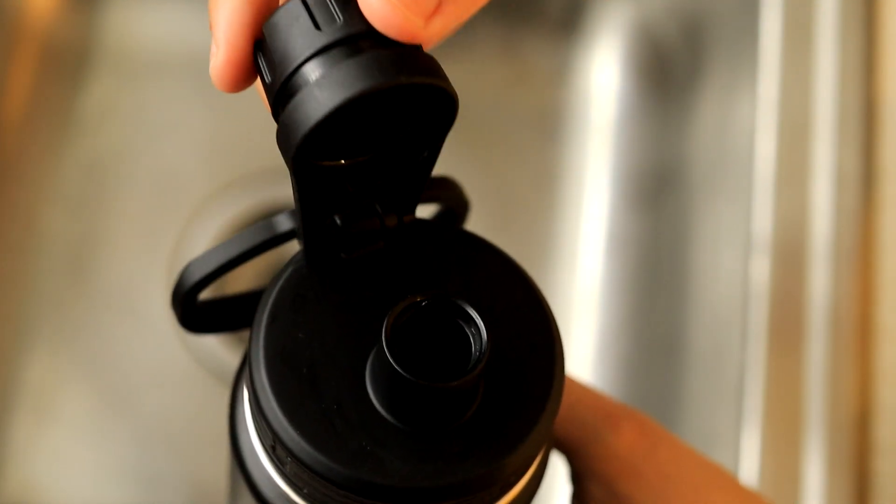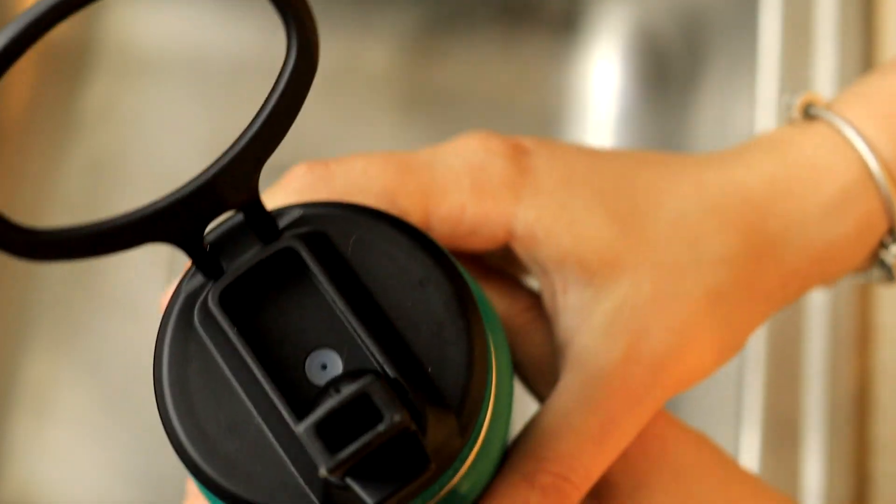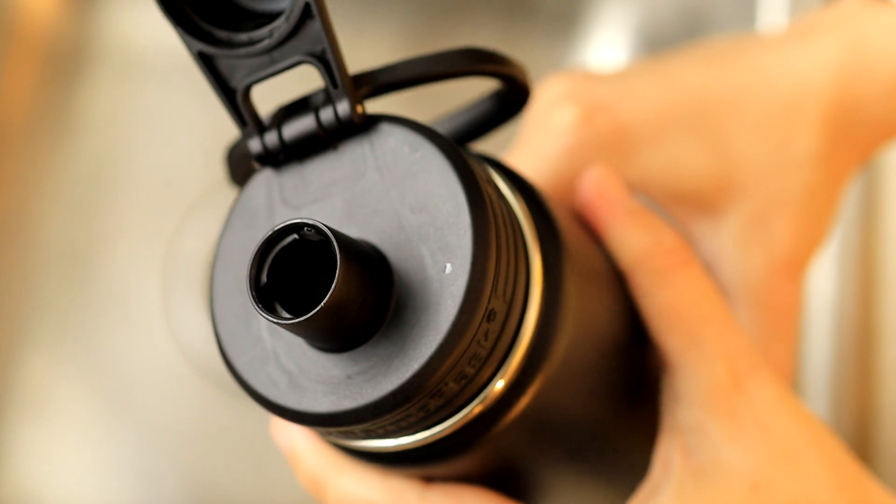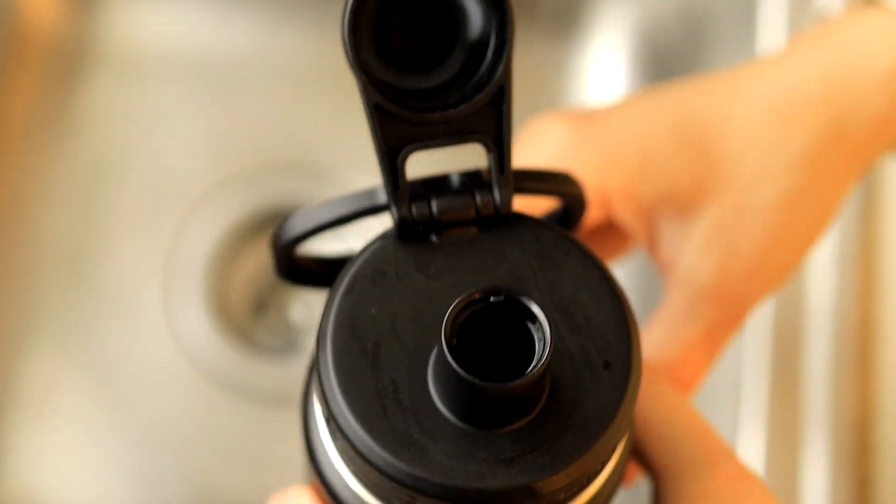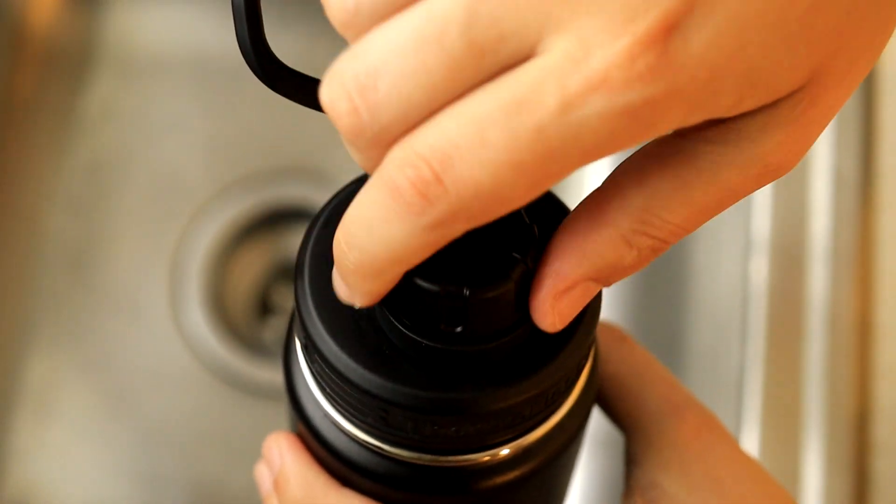The reason why I chose this spout is because it has a very good locking mechanism versus the spout on the green one, because for that you have to use your fingers to pry open the bottle. Now I work out a lot, so I need a bottle that in case it lands on the floor at the gym for whatever reason, it doesn't leak.